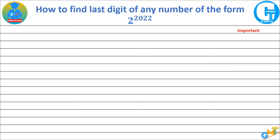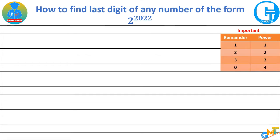The first important table: if the remainder after dividing the power — here 2022 — by 4 is 1, take a to the power 1. If remainder is 2, take a to the power 2. If remainder is 3, take a to the power 3. If remainder is 0, take a to the power 4.